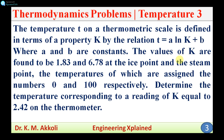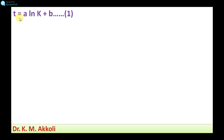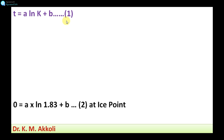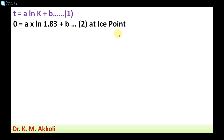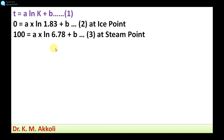By using the two equations from the ice point and steam point values, we can solve for the two unknowns A and B. Then substituting those into the equation, for K equal to 2.42 we can find the temperature. The temperature variation equation T = A·ln(K) + B is taken as equation 1. At ice point, temperature is 0 and K is 1.83, giving 0 = A·ln(1.83) + B as equation 2. At steam point, temperature is 100°C and K is 6.78, giving 100 = A·ln(6.78) + B as equation 3.